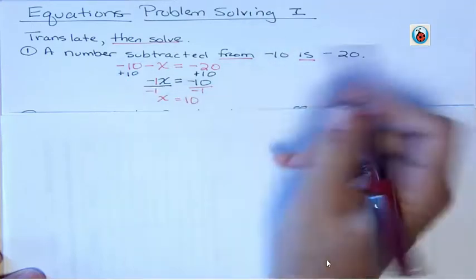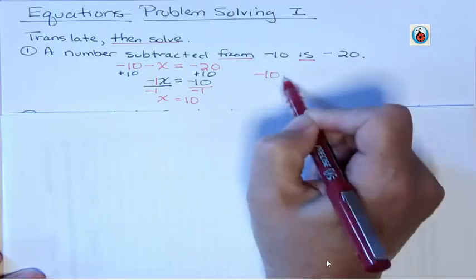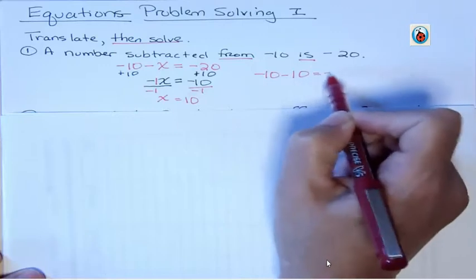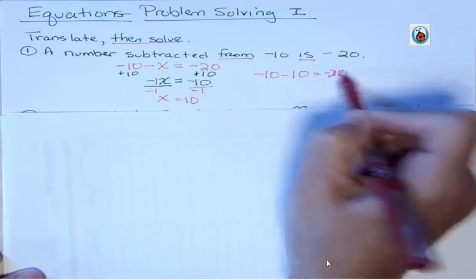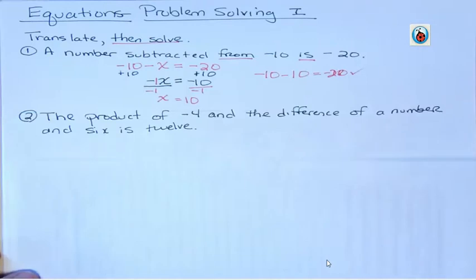So a number subtracted from negative 10 is negative 20. My number, I think, is 10. That 10 is being subtracted from negative 10. And sure enough, that equals negative 20. That's the first one. Let's look at the next one.